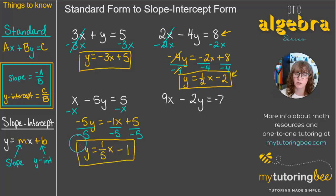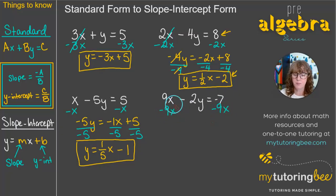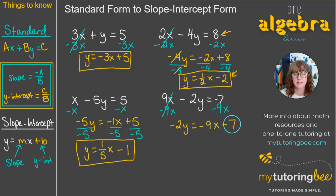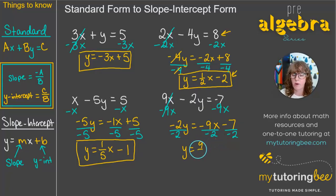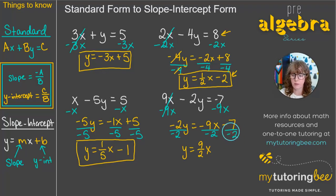One more example: 9X minus 2Y equals negative 7. We subtract 9X from both sides, leaving negative 2Y equals negative 9X minus 7. Then we divide everything by negative 2. The negatives cancel, and 9 over 2 is not evenly divisible, so we leave it as an improper fraction. Improper fractions are the best way to write slope. For the constant, we get positive 7 over 2 — you can leave it as an improper fraction or convert to a mixed number if it's easier to graph.